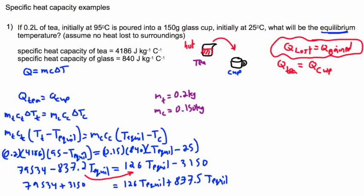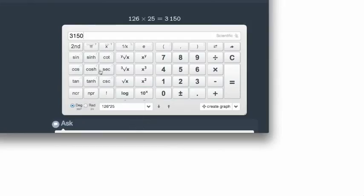I'm going to have 126 T equilibrium plus 837.2 T equilibrium. That's going to be the same thing as on the left side, 79534 plus 3150. So 79534 plus 3150 gives me 82684.